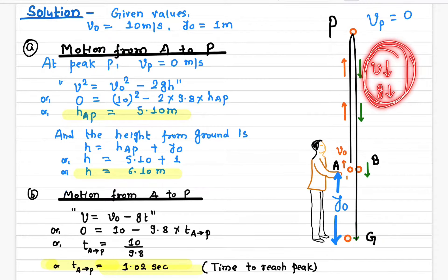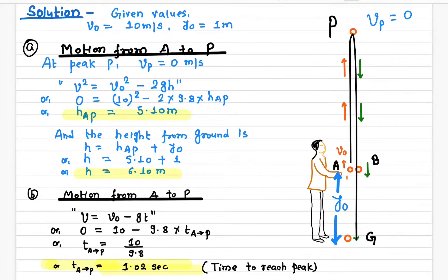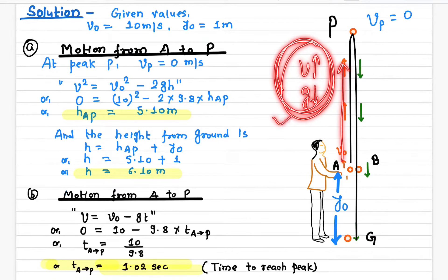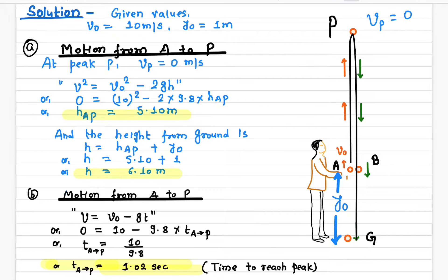When the velocity and acceleration are in the same direction, the magnitude of the velocity — the speed — starts increasing. When the ball is thrown upward, the velocity is in the upward direction and the acceleration is in the downward direction. Since these two are in opposite directions, the speed starts decreasing.